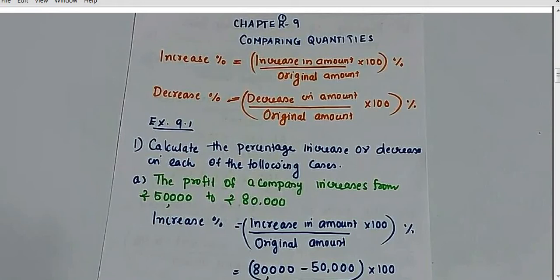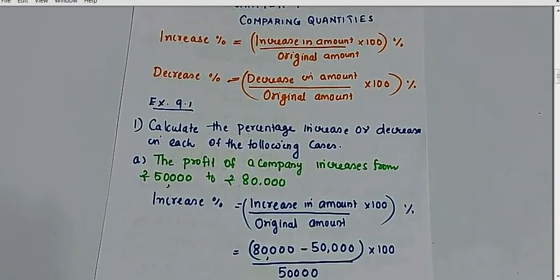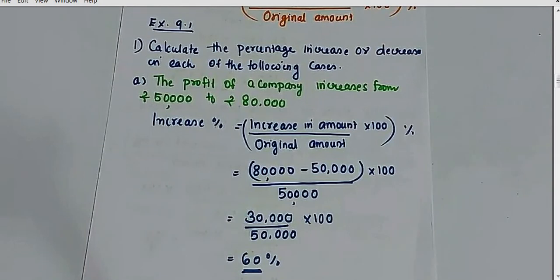Question (a): The profit of a company increased from 50,000 to 80,000. The question is asking how much the company's profit increased — from 50,000 to 80,000. So we apply the increase percentage formula: increase in amount divided by original amount, multiplied by 100. We put in the values: increase in amount multiplied by 100 upon original amount.